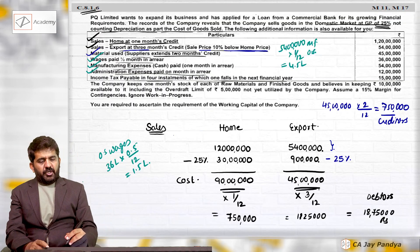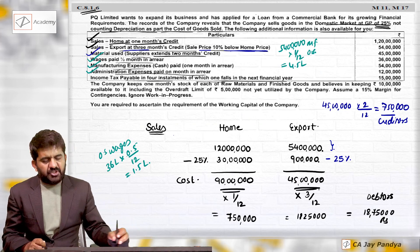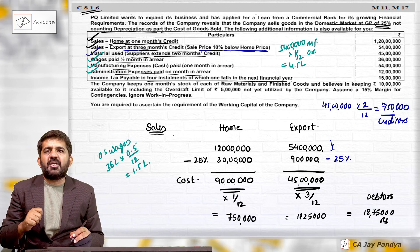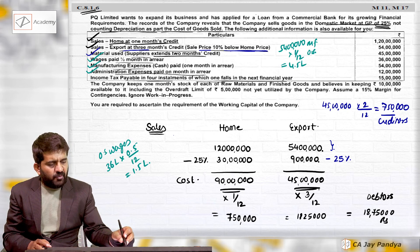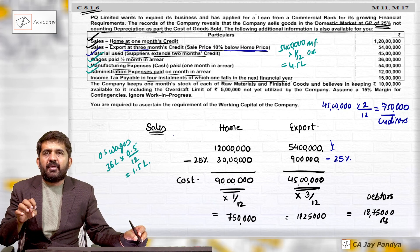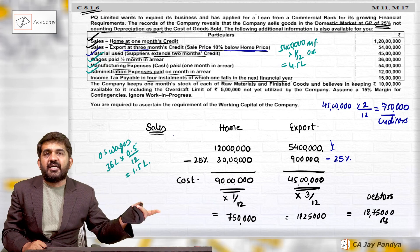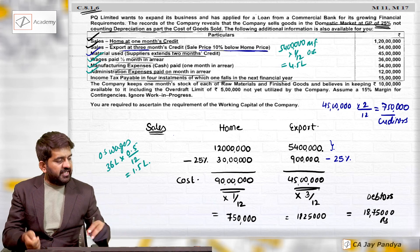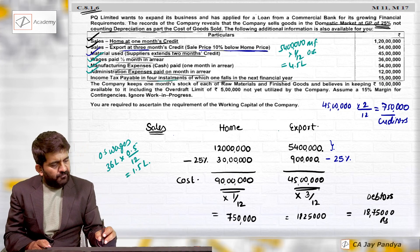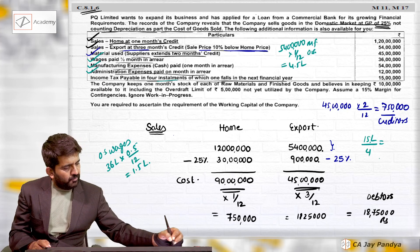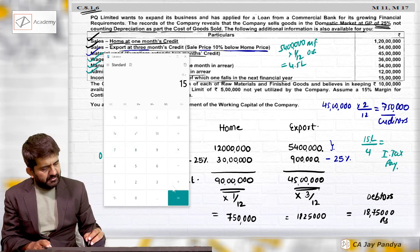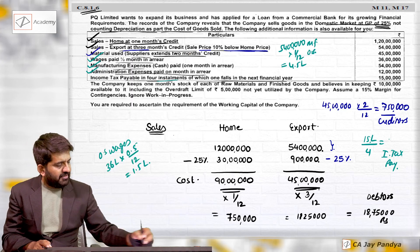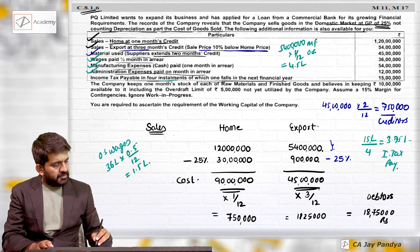Income tax is payable in 4 installments, of which one falls in the next financial year. This means 3 installments fall in the current year. The language could be read as either an outstanding expense or a prepaid expense, but more logically it is treated as an outstanding liability. Income tax payable = 15 lakhs divided by 4 = 3 lakh 75,000, treated as a current liability.